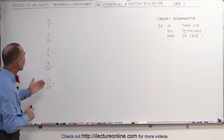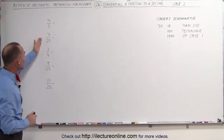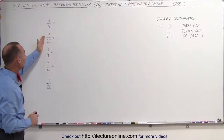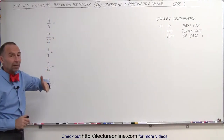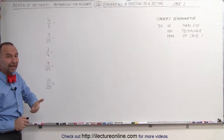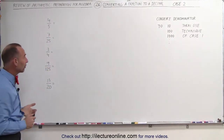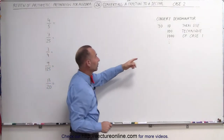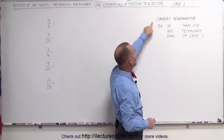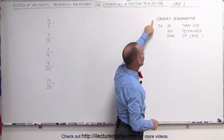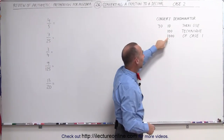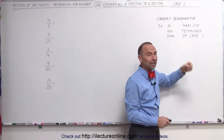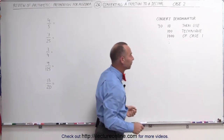Therefore, what we're going to do is take our fraction and change it into a fraction with a denominator that's equal to a 10, a 100, or a 1000. In other words, this is a case 2 type: you convert the denominator to a 10, a 100, or a 1000, and then use the technique we learned in the previous video.